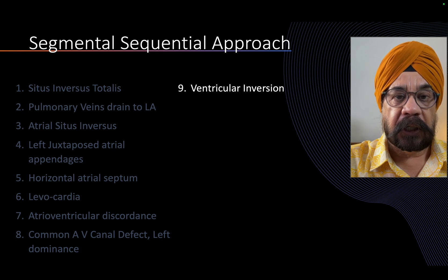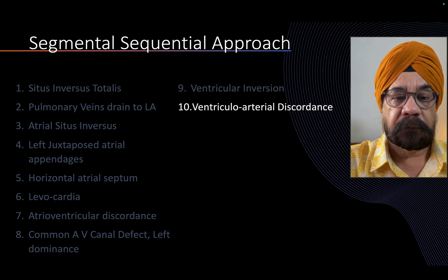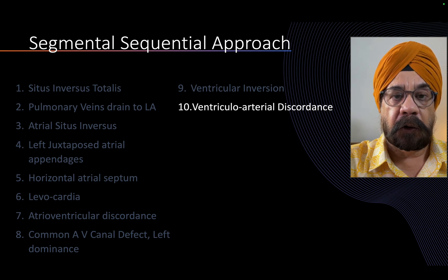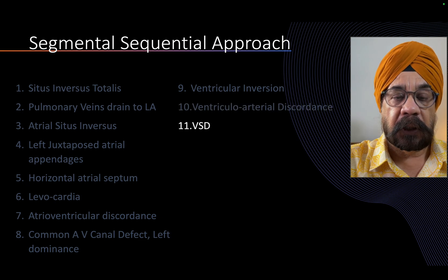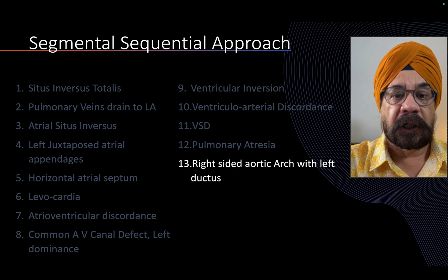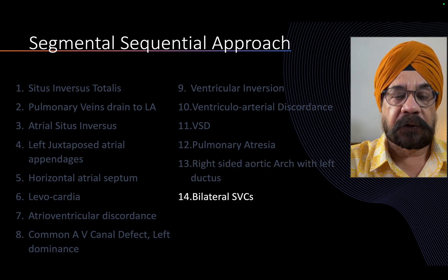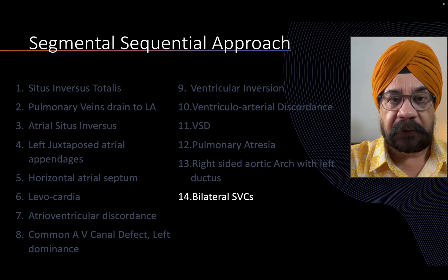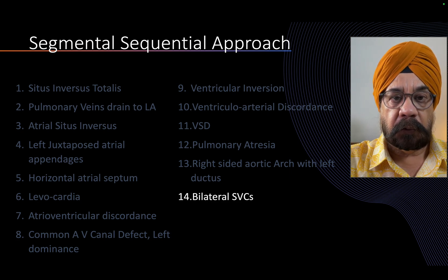This patient also had ventricular-arterial discordance in the form of CCTGA. There was a large VSD, and there was pulmonary atresia. There was a right-sided aortic arch with left ductus — we would have expected a right-sided aortic arch with right ductus because of the situs inversus. And there were bilateral superior venae cavae.